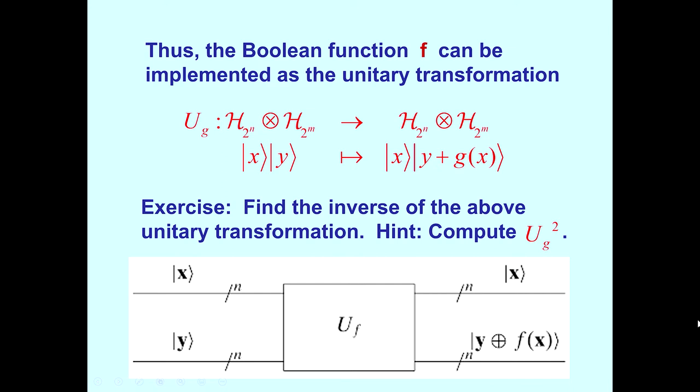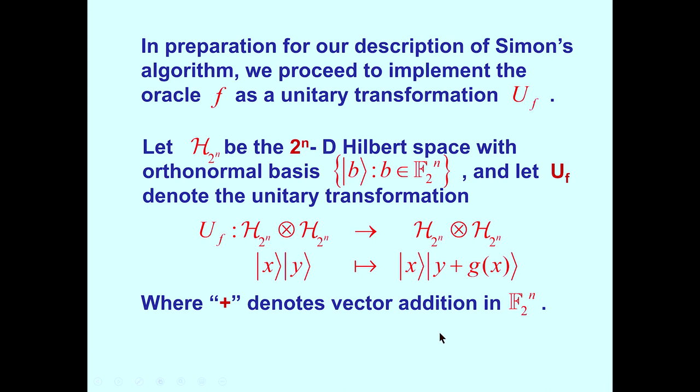I'd like to remind people that in this wiring diagram, a line with a slash n denotes n-qubit lines. And so we see we have two n-qubits going into the unitary transformation, representing Simon's oracle. In preparation for a description of Simon's algorithm, we proceed to implement the oracle f as a unitary transformation. Let H2n be the 2 to the n dimensional Hilbert space with orthonormal basis, as so shown. And let U sub f denote the following unitary transformation.